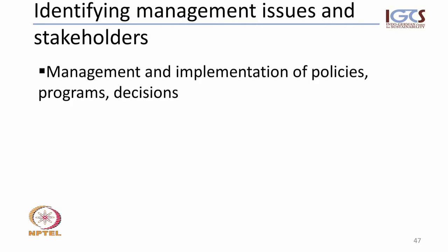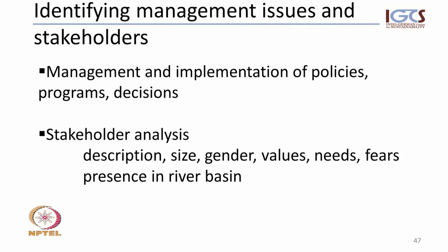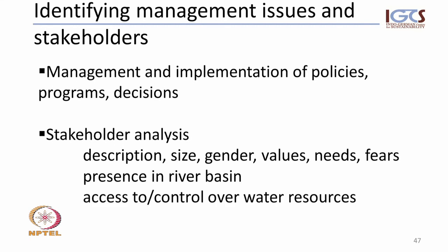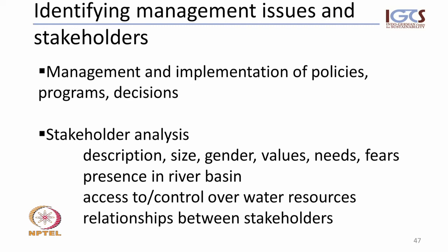It is also important to identify the stakeholders dealing with management, including management and implementation policies, programs, decisions, and the institutional frame. A stakeholder analysis should outline a description of the stakeholders — who those people are, the size, gender, values, needs, and fears — and their presence and representation within the river basin. It should also include their access to and control over water resources: who has access, when and how often, and who controls those water resources. The relationships between stakeholders should also be mapped out.